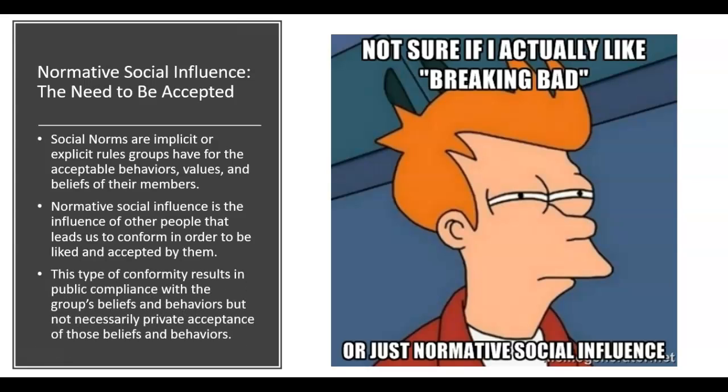This type of conformity—normative social influence—typically results in what's called public compliance. You're in the social setting walking on the right-hand side of the stairway, but in your head you may say there's no logical reason to have to do that. We comply even though we could disagree. Typically you're not going to form an internal belief that this is an absolute value—that would be private acceptance. There are other kinds of normative social influence where you conform to do something illogical or irrational, and the question becomes why.